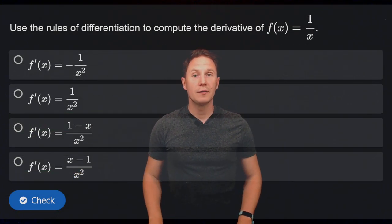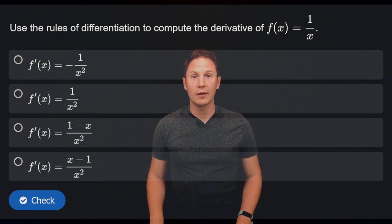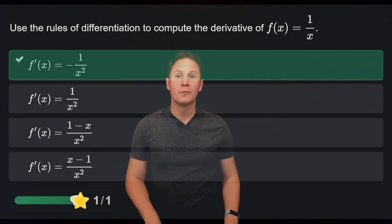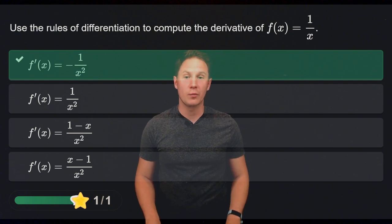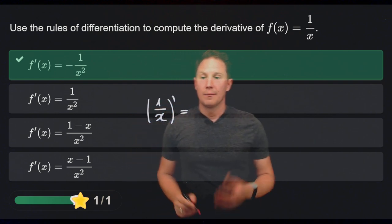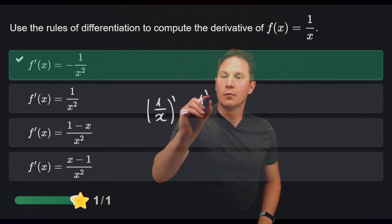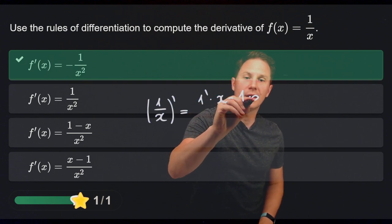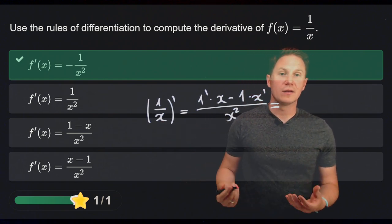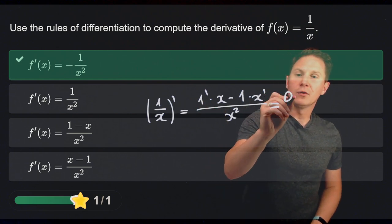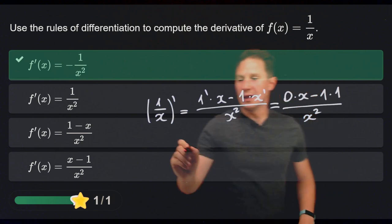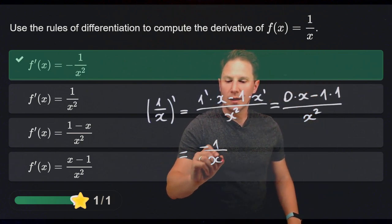Use the rules of differentiation to compute the derivative of f of x equals 1 over x with respect to x. The derivative is minus 1 over x squared. We obtain this using the quotient rule: the derivative of 1 times x minus 1 times the derivative of x, all divided by x squared. Using the basic derivatives — the derivative of any constant is 0 and the derivative of x is 1 — we get a numerator of minus 1 divided by x squared.